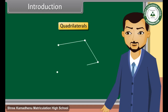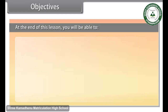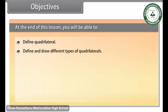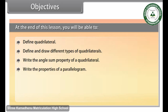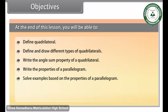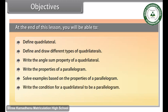A quadrilateral is formed when we join four points. Objectives: at the end of this lesson you'll be able to define quadrilateral, define and draw different types of quadrilaterals, write the angle sum property of a quadrilateral, write the properties of a parallelogram, solve examples based on the properties of a parallelogram, write the condition for a quadrilateral to be a parallelogram, and prove the midpoint theorem.